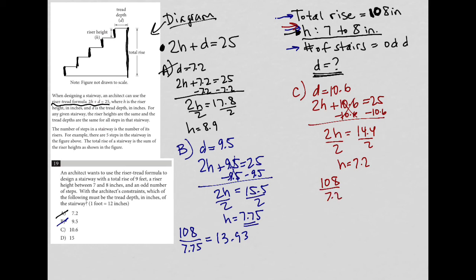Let's give it the odd number of stairs test. 108 divided by 7.2 equals 15, which is an odd number. So H is between 7 and 8, 15 stairs adds up to a total rise of 108, and 15 is an odd number. I'm very confident that choice C is the best answer.